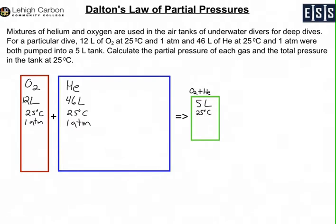To solve this problem, we're going to use the ideal gas law, PV equals nRT. First, we need to look at the number of moles we have of each of these gases.